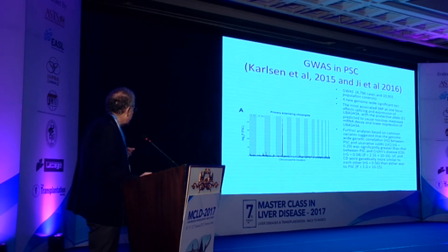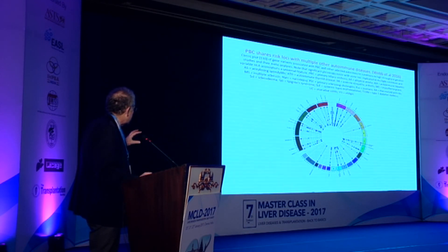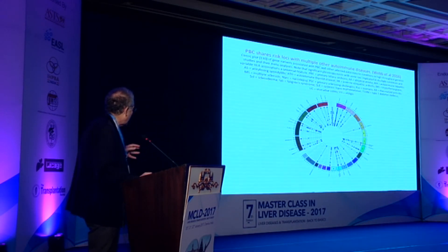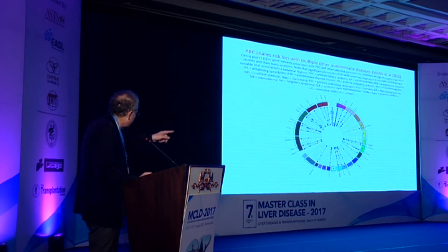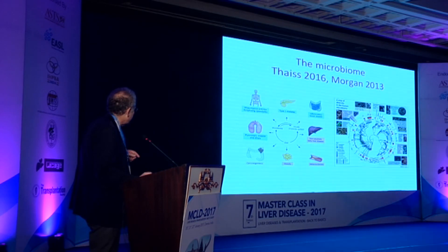Similar things have been done with PSC, showing the importance of genetic associations in sclerosing cholangitis. What's of interest is that PBC and other autoimmune liver diseases share risk loci with other autoimmune diseases. The different diseases are around the edge of this diagram and you can see where there is commonality in genetic association.